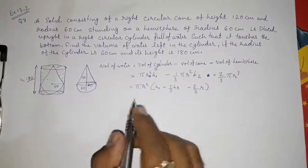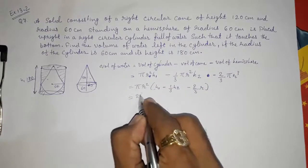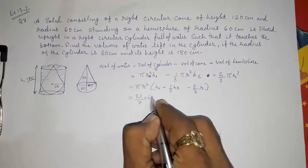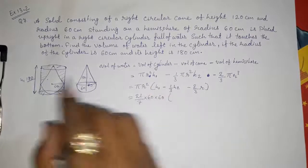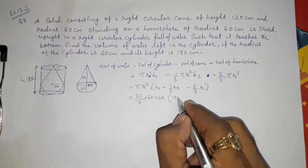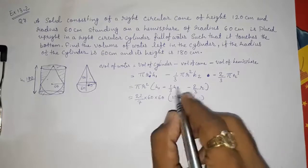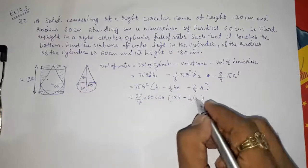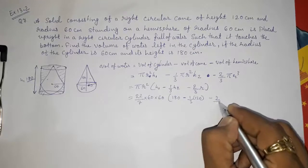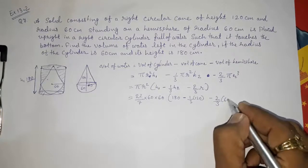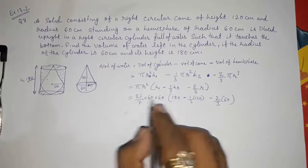They have not given a value for π so we will take 22/7. Radius is 60, so 60 × 60. Then h1 is 180, minus (1/3) × h2 which is 120, minus (2/3) × r which is 60.